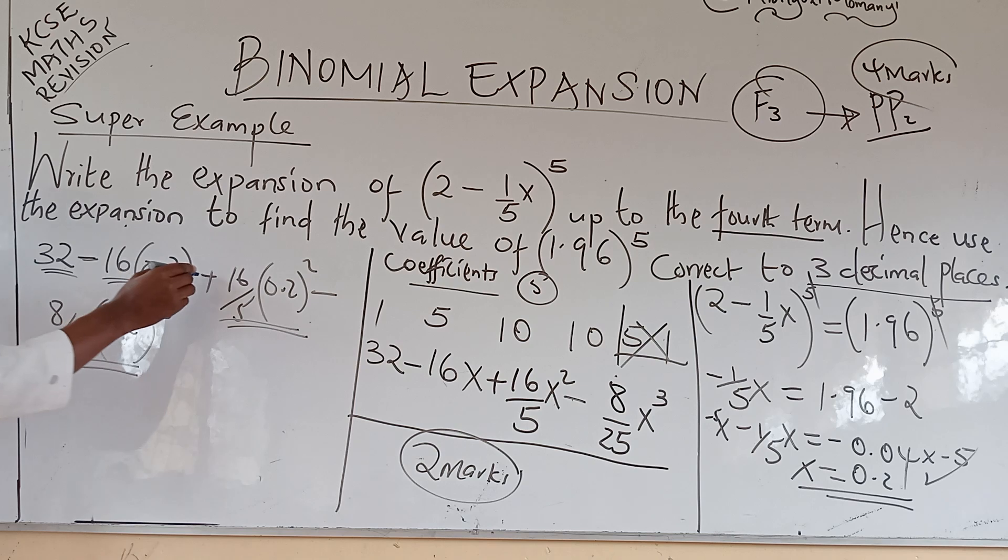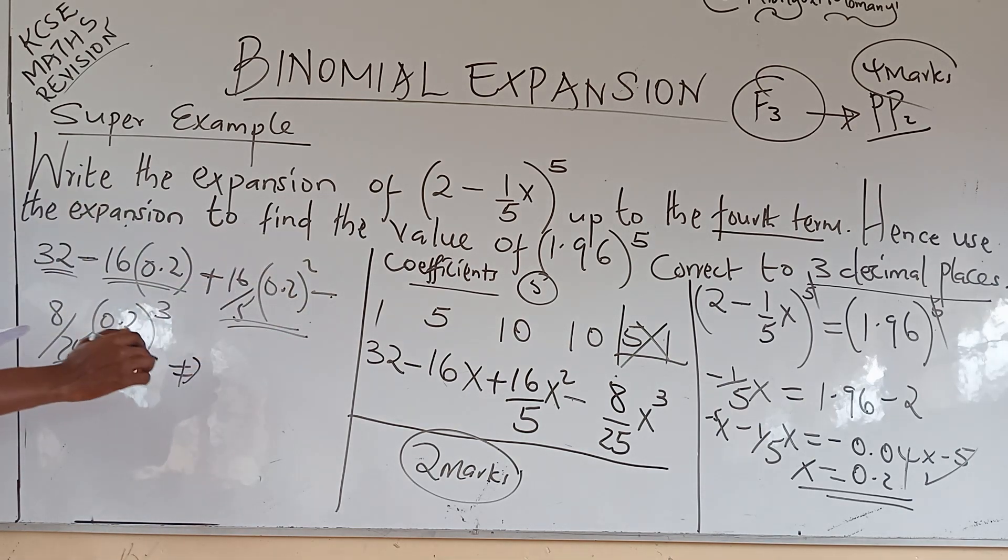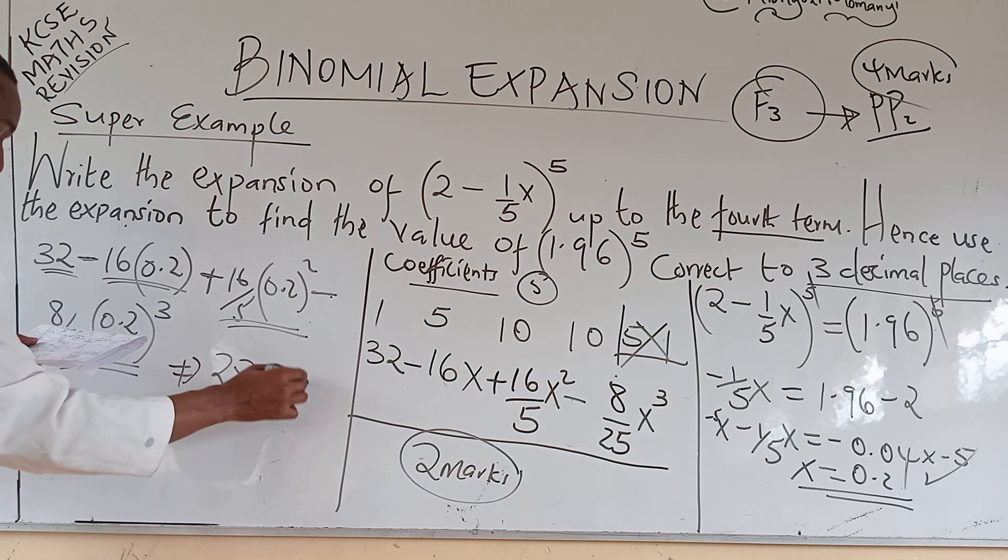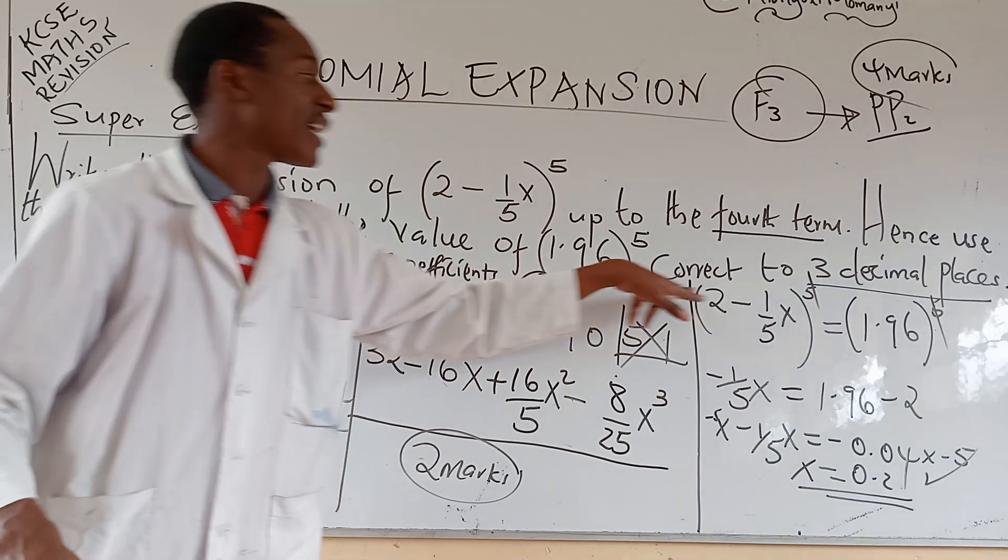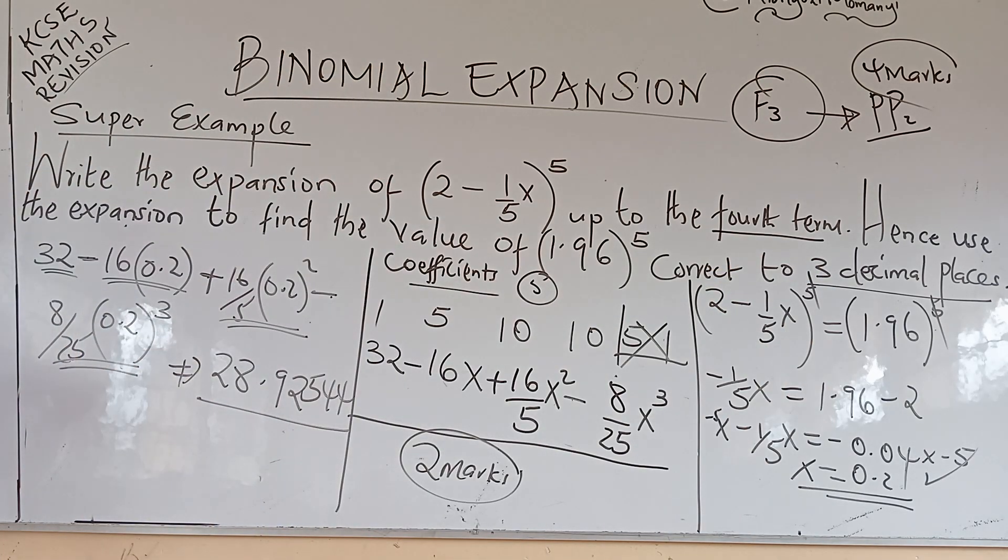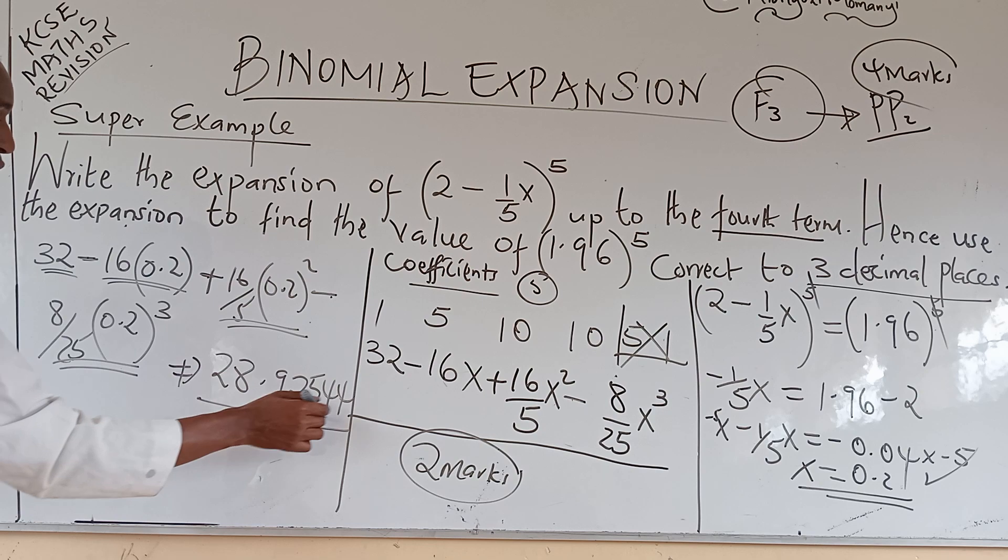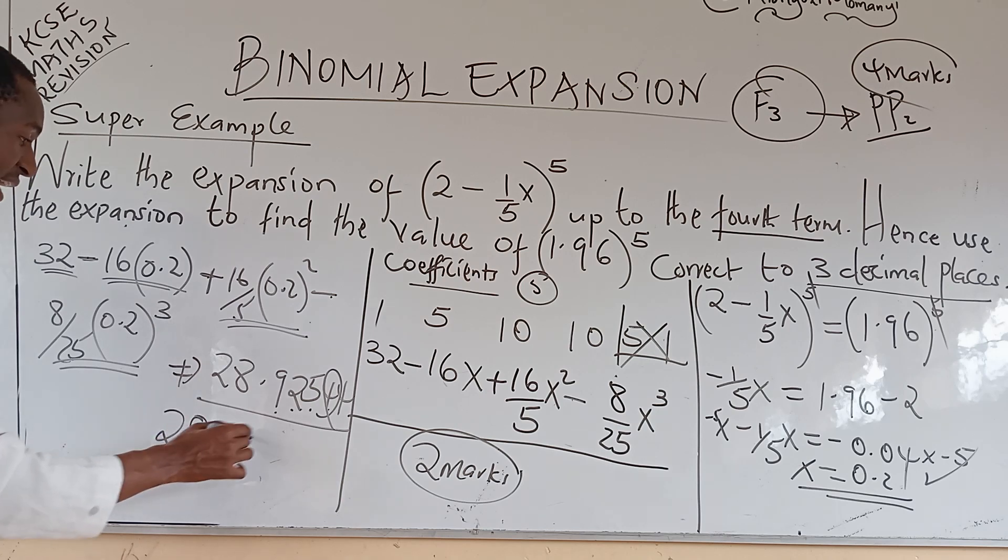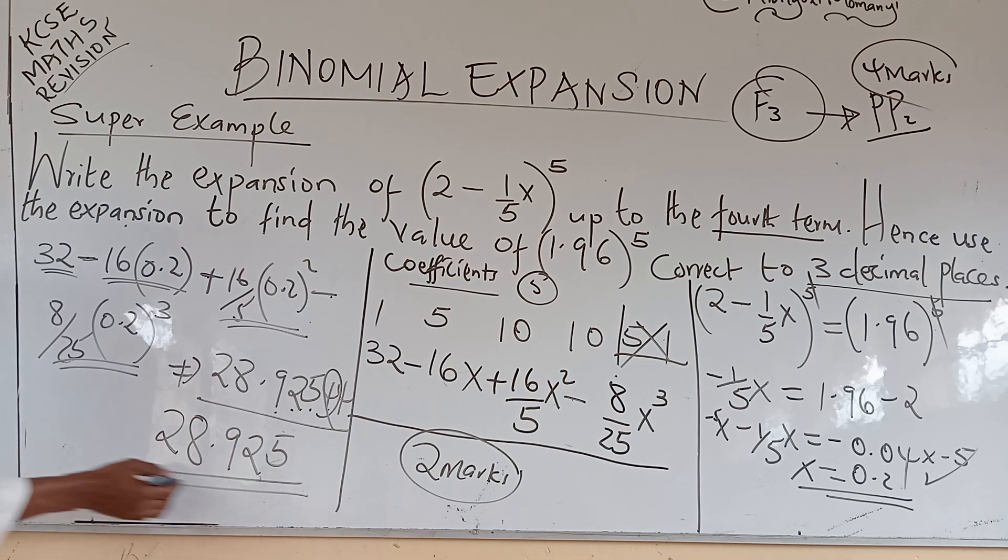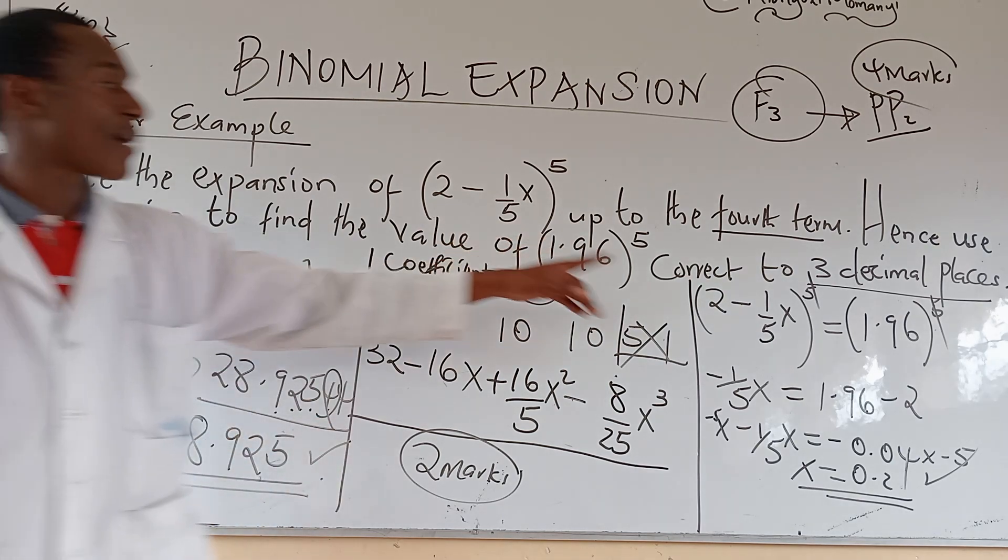Considering these signs here, the negative, the plus, the minus, you consider them very well. You will get your value, the whole of it, as twenty-eight point nine two five four at this point. But the question asks you, correct to three decimal places. So, you count the number of decimal places, one, two, three. You look at the fourth one and it is less than five. So, if it is three decimal places, your answer is going to be twenty-eight point nine two five. This is your correct answer according to the requirement of the question.